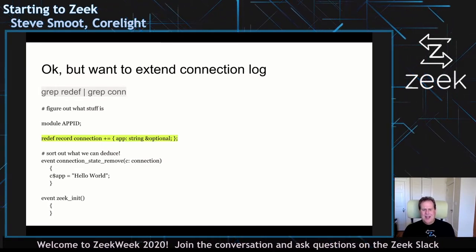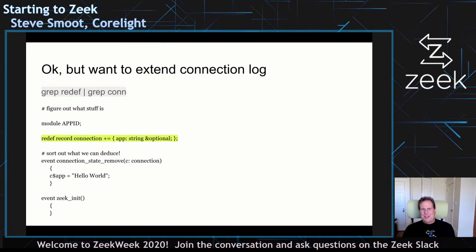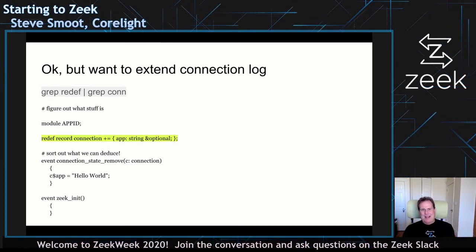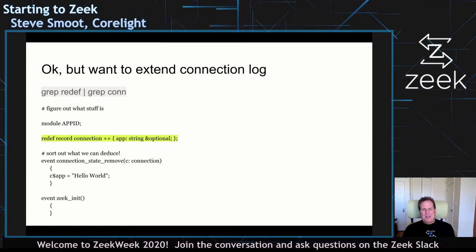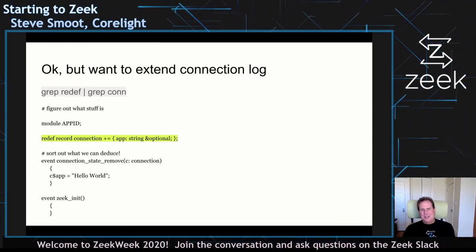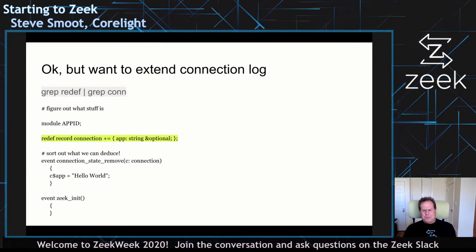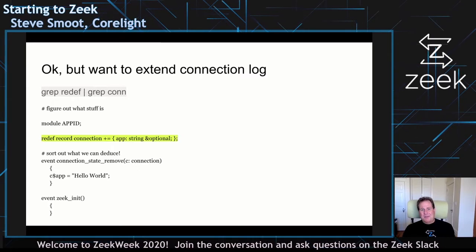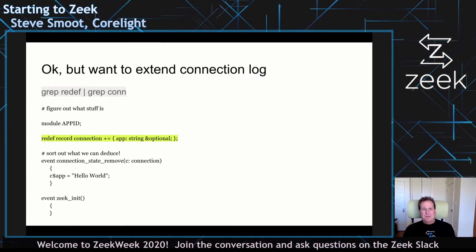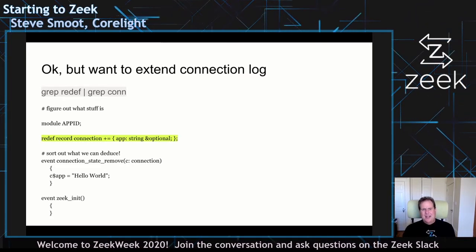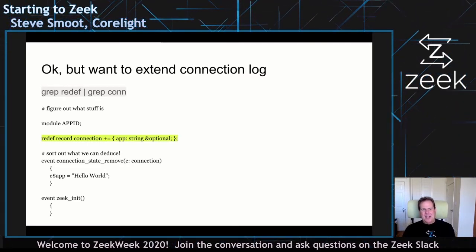The purpose of the script is to label connections with what app I think they are. I've got a bunch of different ideas for how to do that, pulled from some public sources and a little bit from Zeek info. I'm going to want to extend the conn log, so I grepped for 'redef' and 'conn' because I figured I'd find some code that was redefining the conn log to add a field, and I found code that I've highlighted there.